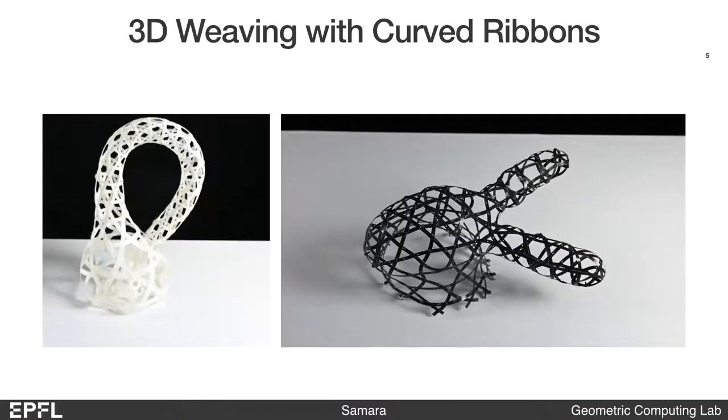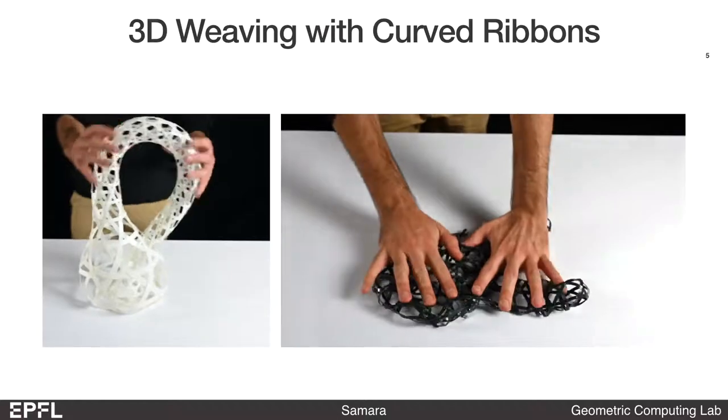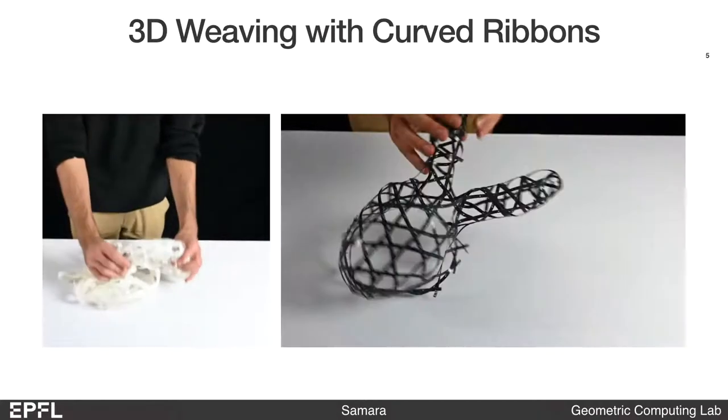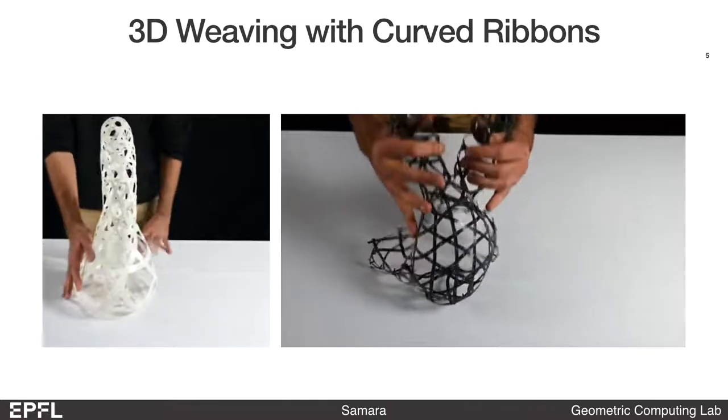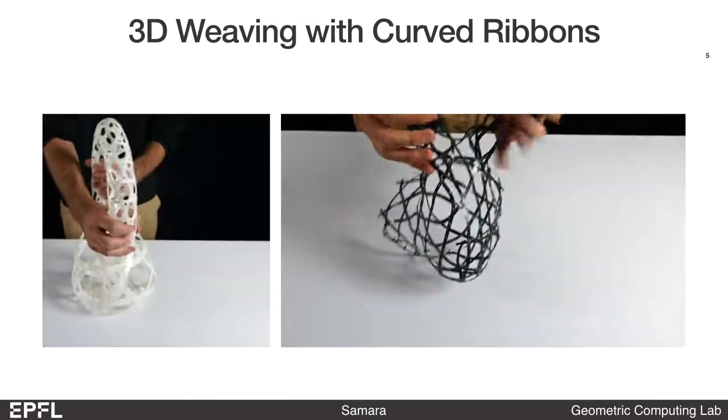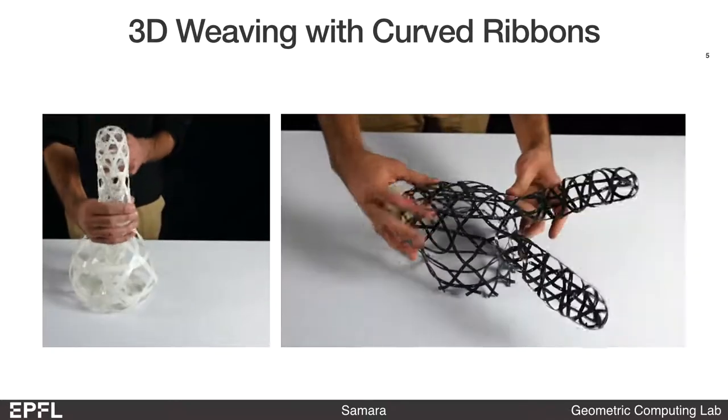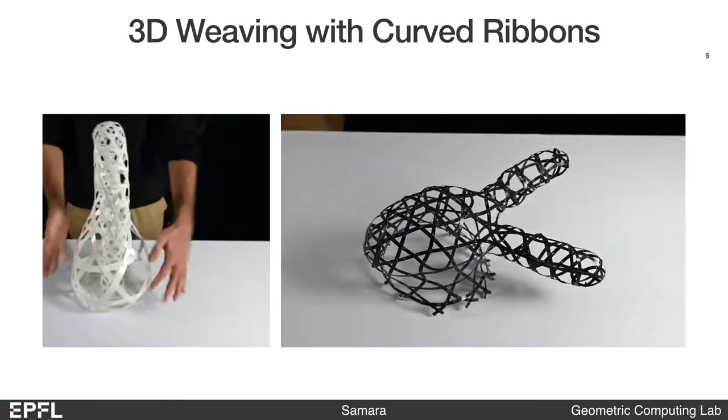We apply physics-based simulation to accurately track the behaviors of the ribbons, as well as their interactions with other ribbons in this coupled system. As you can see in the videos here, the optimized structure will settle reliably back into the predicted shape, even after extreme deformations.